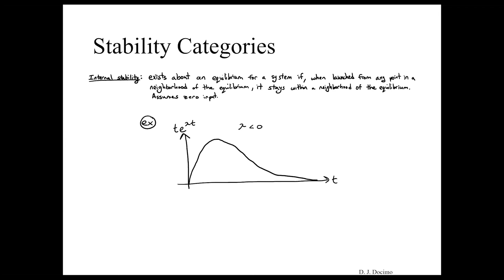Let's say we have a function t times the exponential to some lambda times t for some exponential that's less than zero. Well in this case, the function is going to start to increase for a little bit, but then it's eventually going to decrease again and it's eventually going to go back to zero. This is an example of an internally stable system.